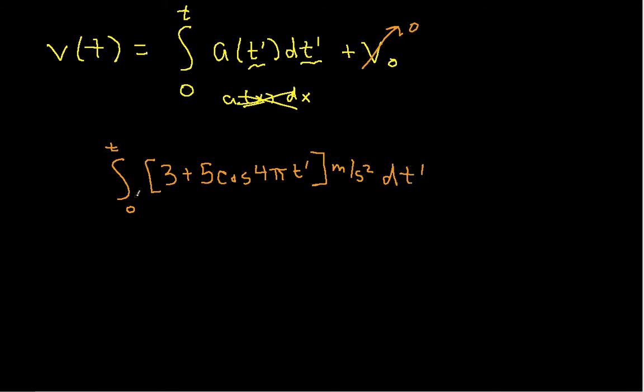So I have the integral from 0 to T of 3 plus 5 cosine 4 pi T prime, and this is all meters per second squared dt prime. I can break this into two parts. I can integrate the 3, so I have the integral from 0 to T of 3 meters per second squared dt. This turns out to just be 3 meters per second squared times T.